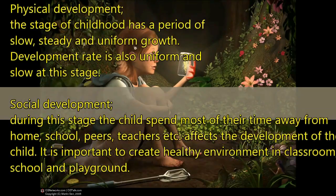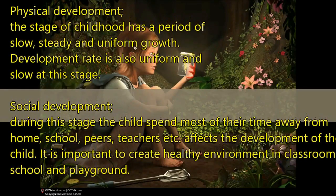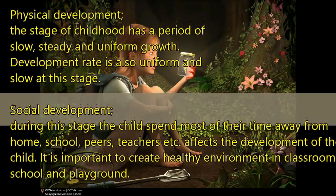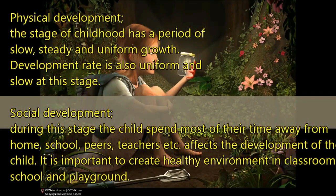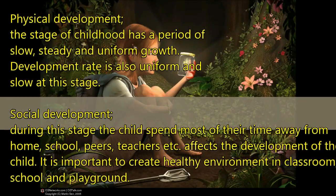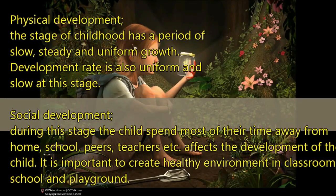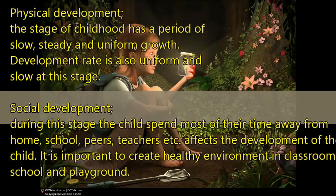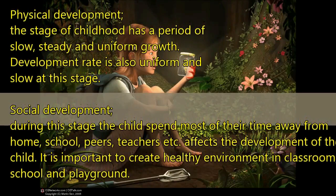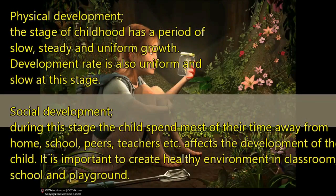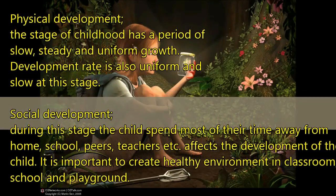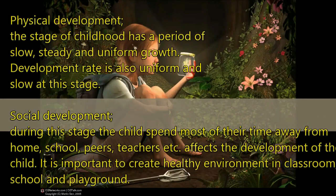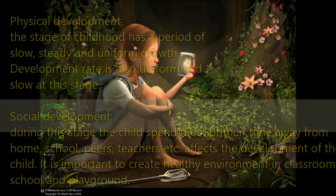Social development during childhood: during this stage, the child spends most of their time away from home. School, peers, teachers, etc. affect the development of the child. So it is important to create a healthy environment in the classroom, in school, and on the playground.